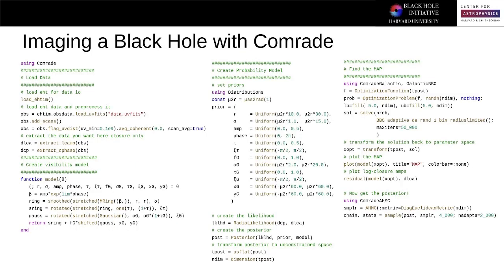So what does imaging a black hole with Comrade look like? Well, it's actually only about 50 to 75 lines of code and is really just broken down into four parts. One, where we load the data. Two, where we create our visibility or image structure model. Three, where we create our probability model. So this includes the priors on our image structure, as well as our data likelihood. Finally, we either find the maximum a posteriori image or the best fit image, or we fully characterize the set of potential image structures using MCMC type methods.